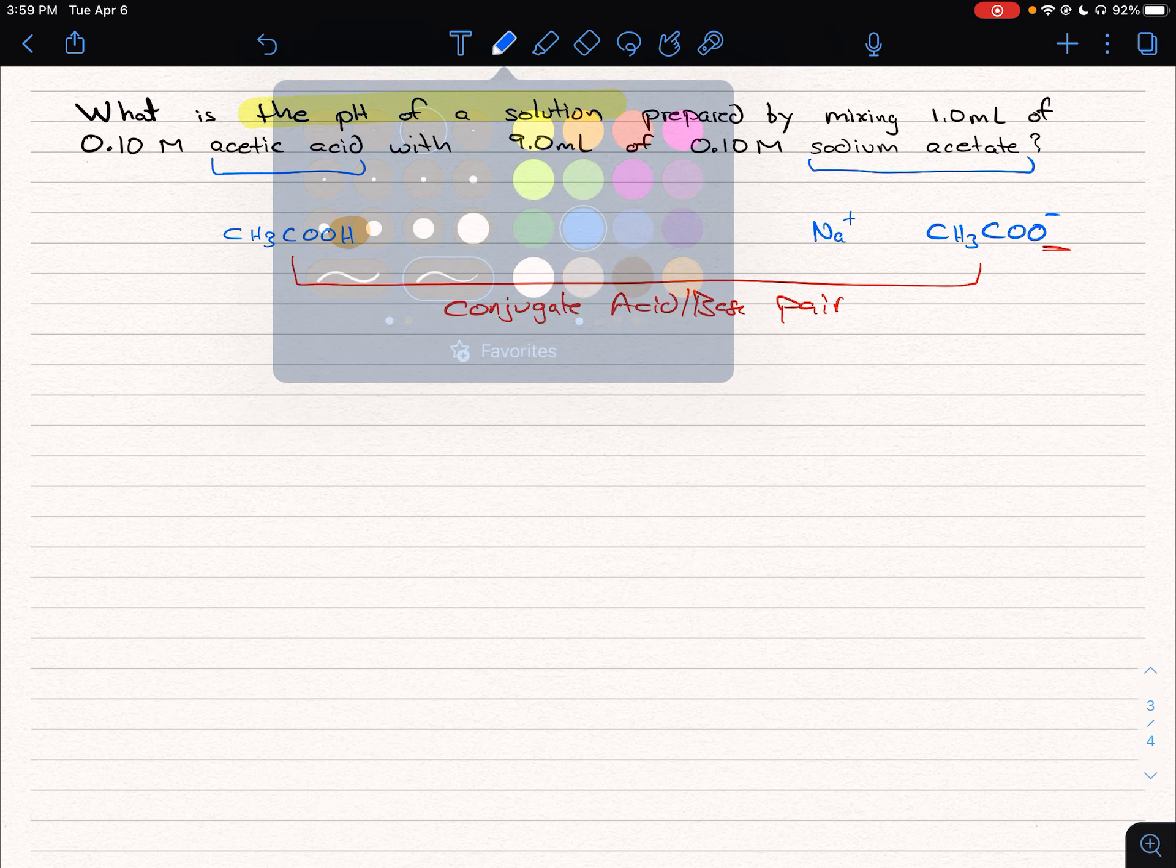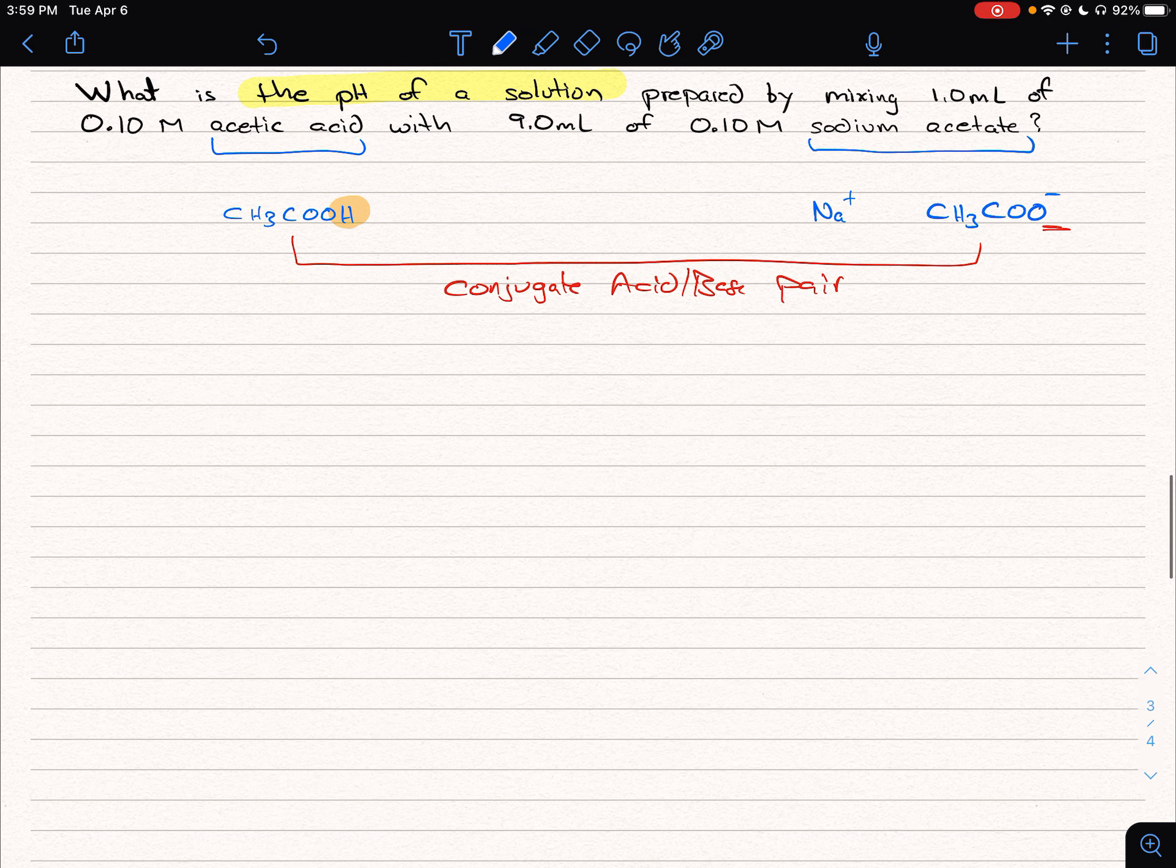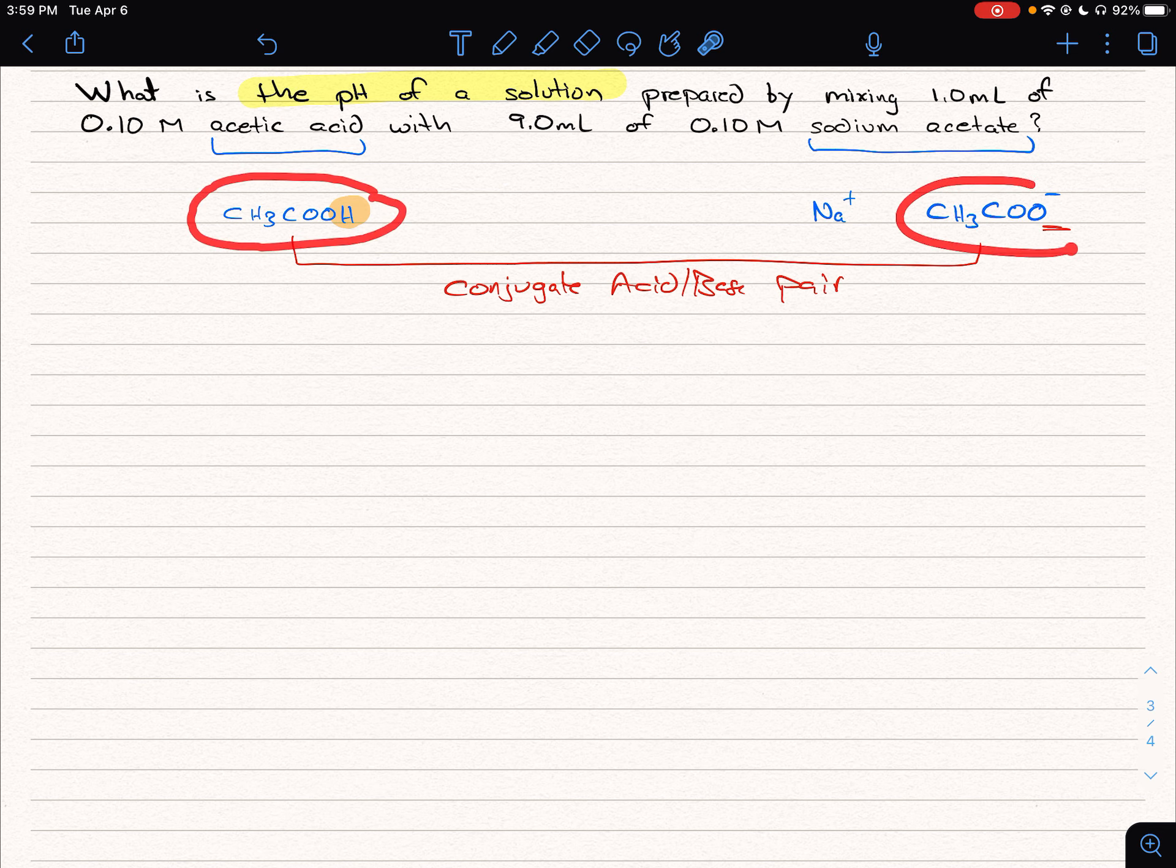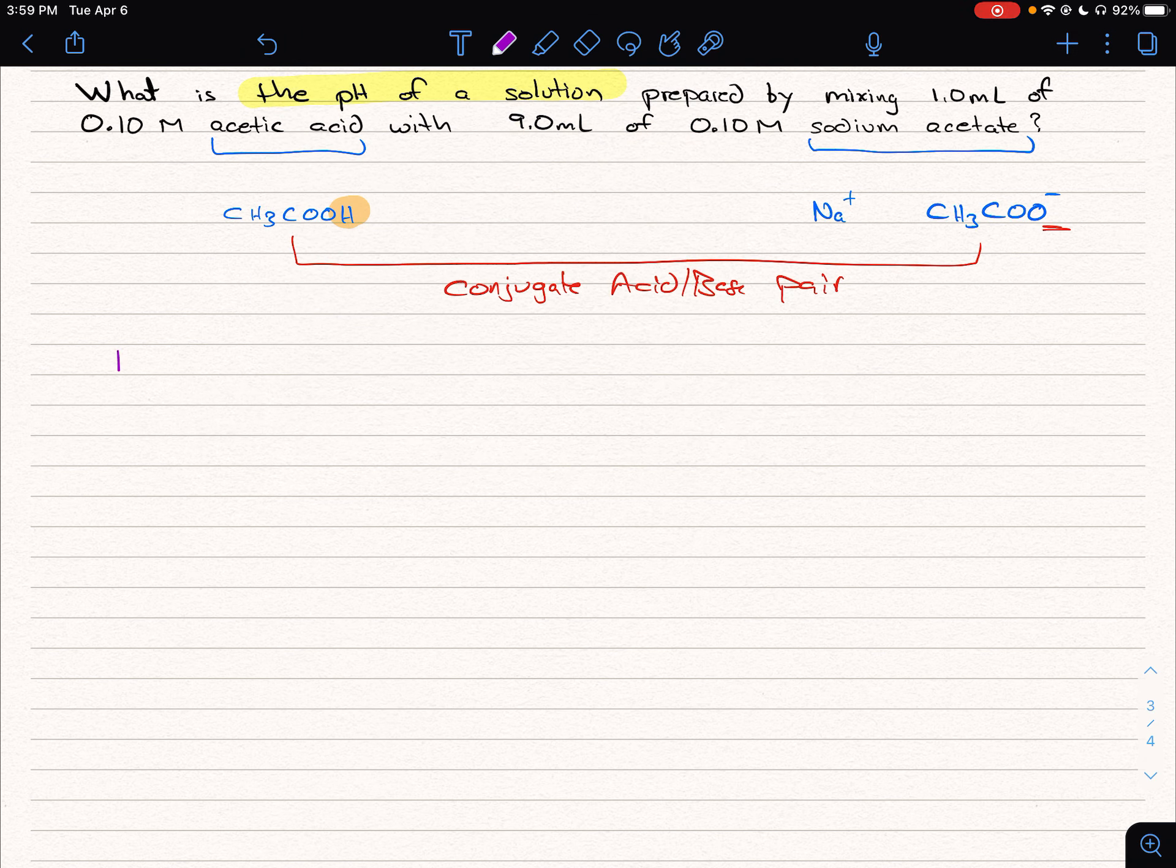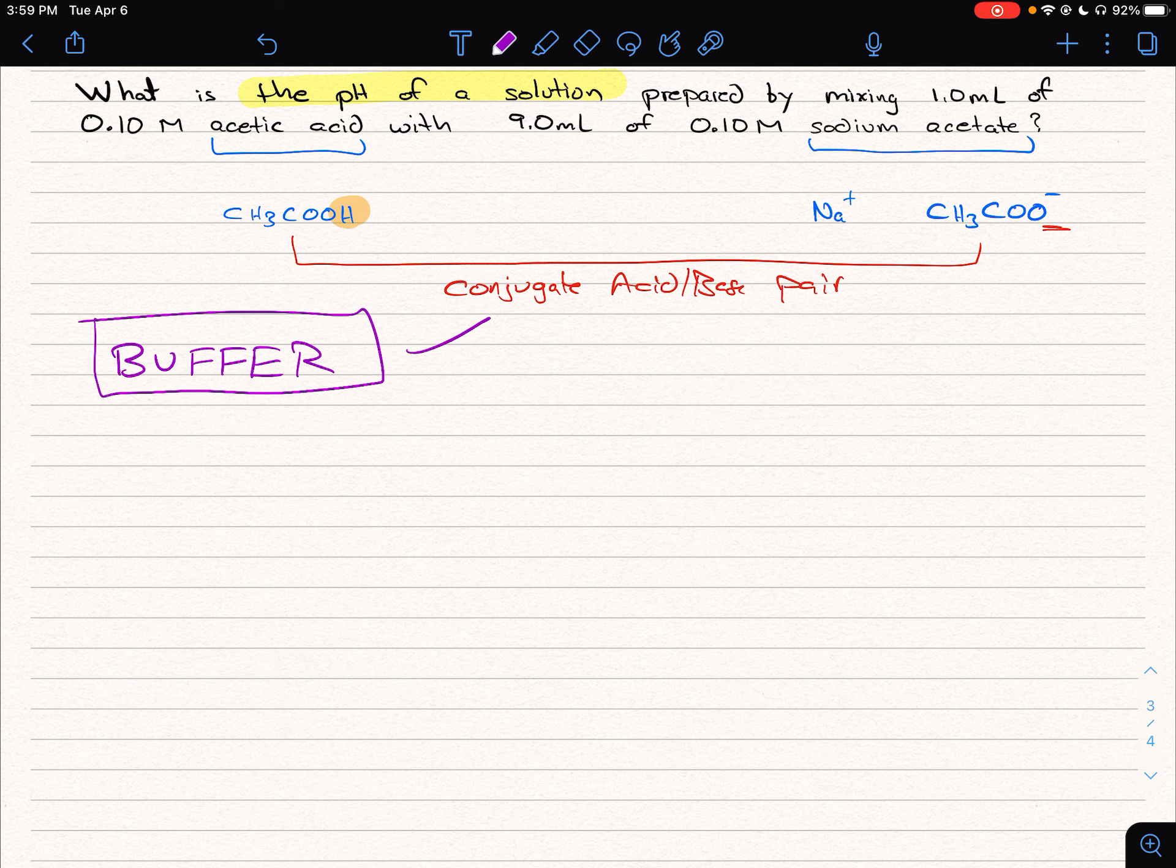That's really important for us, because when we go to write a chemical reaction, once you're dealing with a problem that has weak acid and its conjugate base both present, this is a buffer problem. We know that because we have both the weak acid conjugate base pair present.